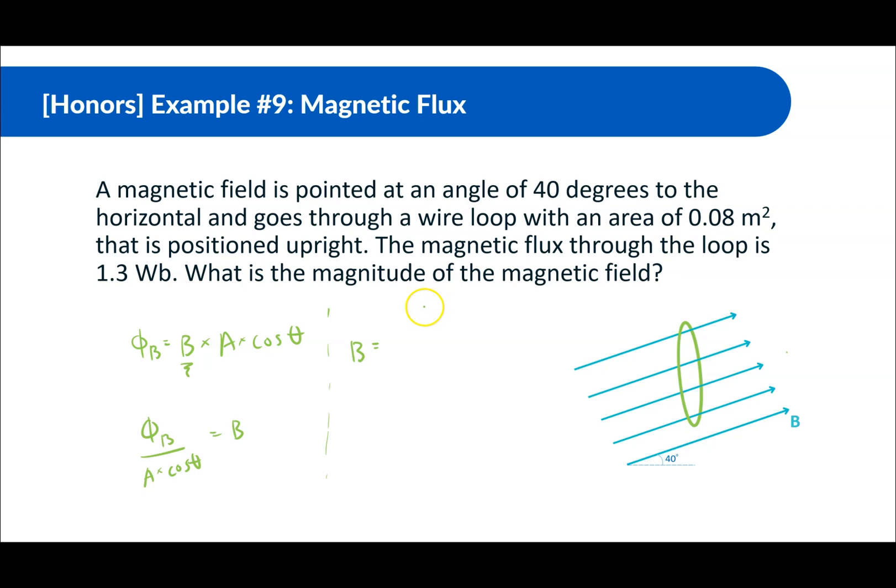B is equal to magnetic flux, which is 1.3, divided by the area, which is 0.08, times cosine, and so this is going to be, if the normal is going to be straight, it says it's upright and this angle here is 40 degrees, then we can say this is 40.